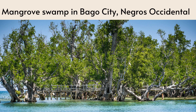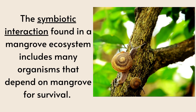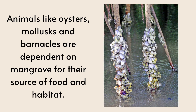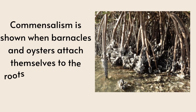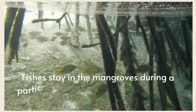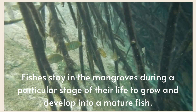The symbiotic interaction found in a mangrove ecosystem includes many organisms that depend on mangrove for survival. Animals like oysters, mollusks, and barnacles are dependent on mangrove for their source of food and habitat. Commensalism is shown when barnacles and oysters attach themselves to the roots of mangroves. Fishes stay in the mangroves during a particular stage of their life to grow and develop into mature fish.